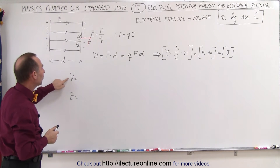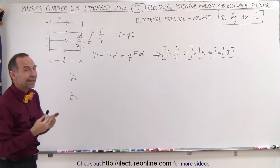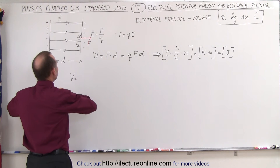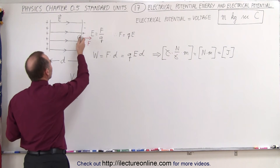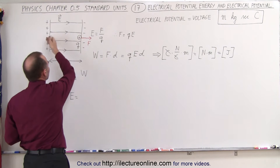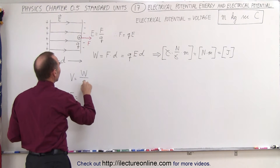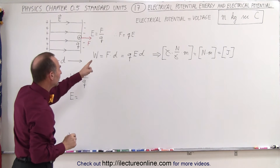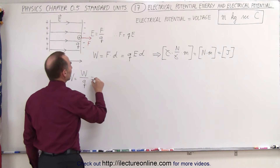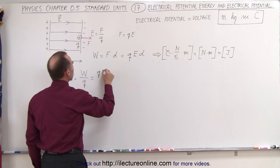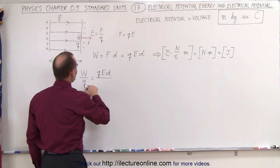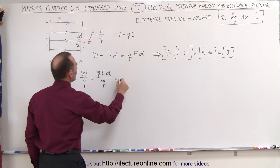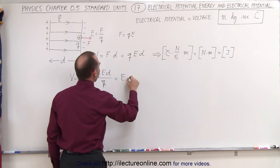Now let's define voltage. Electrical potential is defined as the work done to get the charge to the other side through an electric field, divided by the size of the charge Q. Since we know that the work done is equal to Q·E·D, and we divide that by Q, the Q's cancel out, giving us E times D.